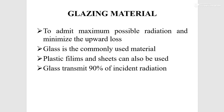The glazing material is used to admit the maximum possible radiation and minimize upward heat loss. Glass is the commonly used material; plastic films and sheets can also be used. Glass transmits 90% of incoming solar radiation. The main property required of a glazing material is that it should transmit the maximum amount of light and reflect only the minimum amount.